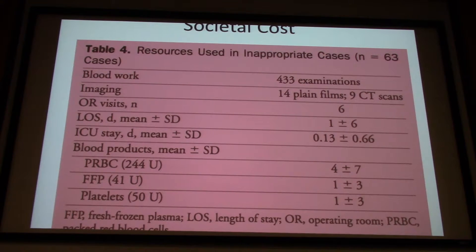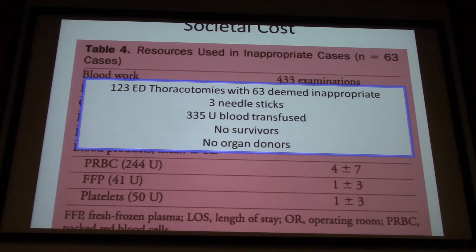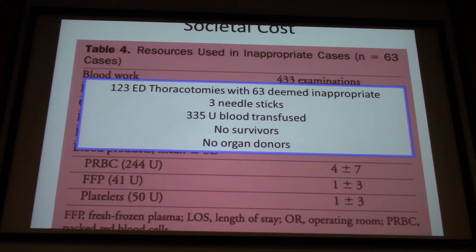ICU beds are another consideration — how many of you have had ICU boarders in the ER because there's no space? In this study there were 123 ED thoracotomies, 63 were inappropriate, there were three needle sticks, and 335 units of blood were used collectively. There were no survivors among the inappropriate group and no organ donors — we don't think about organ donation in the heat of the moment, but it's something to consider.